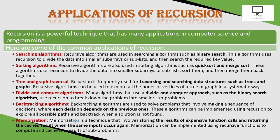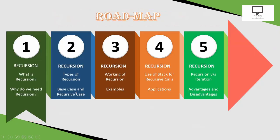Memoization is an algorithmic strategy used when it involves storing the result of an expensive function call and returning the cached result when the same inputs occur again and again. In this situation, memoization is required. Memoization means it memorizes the results and utilizes them when the same inputs occur repeatedly. These are a few well-known examples where recursion is useful.